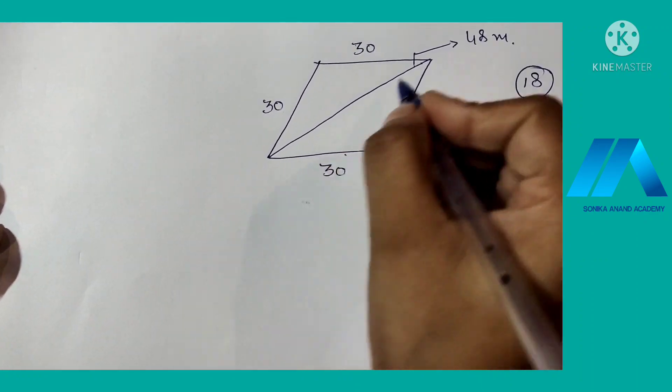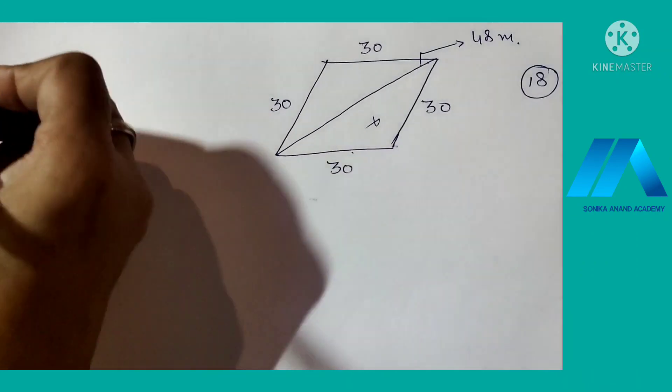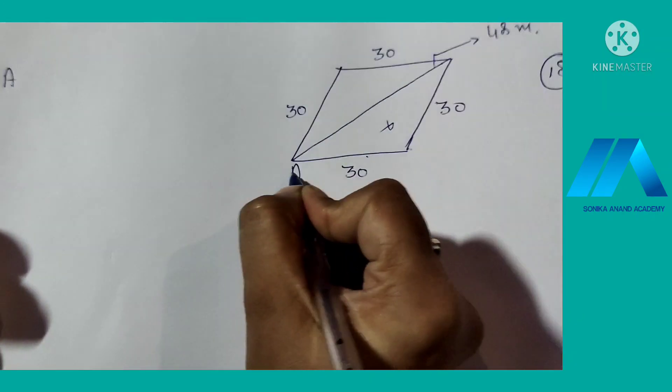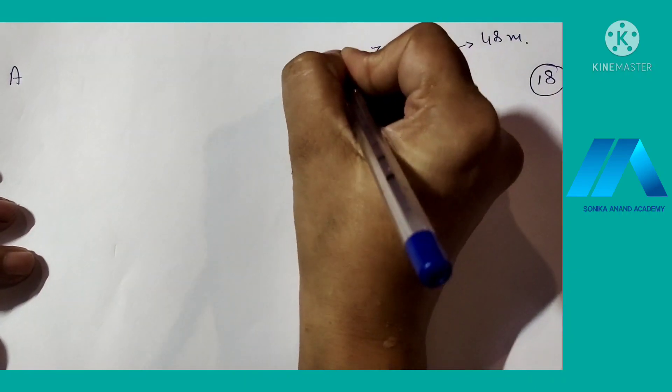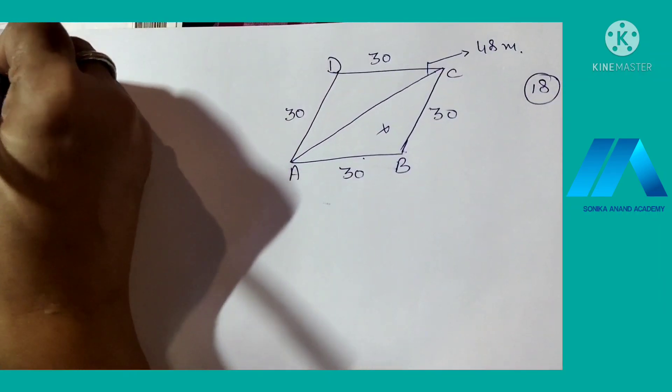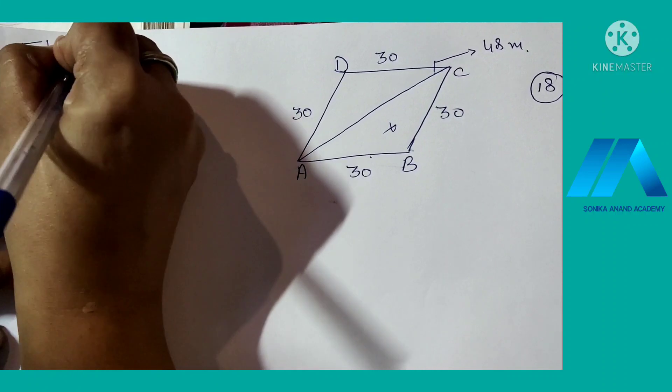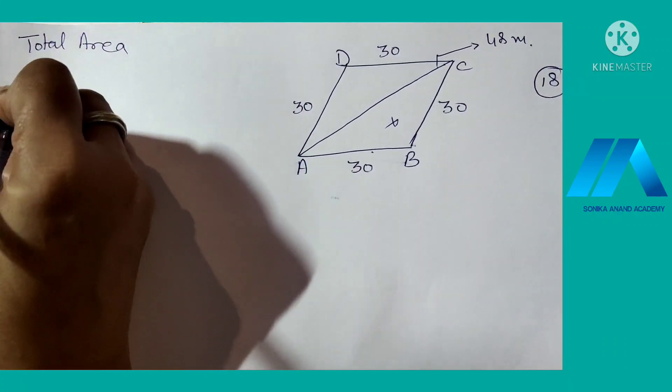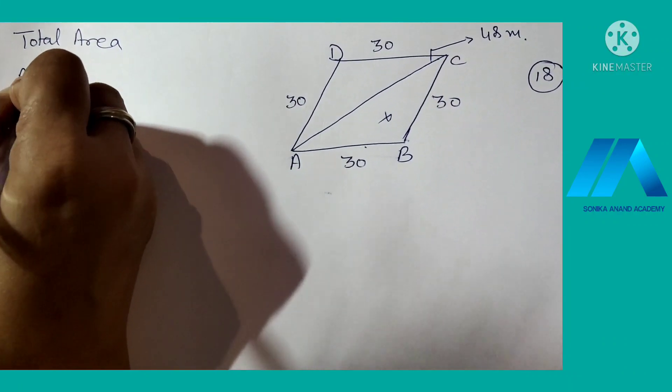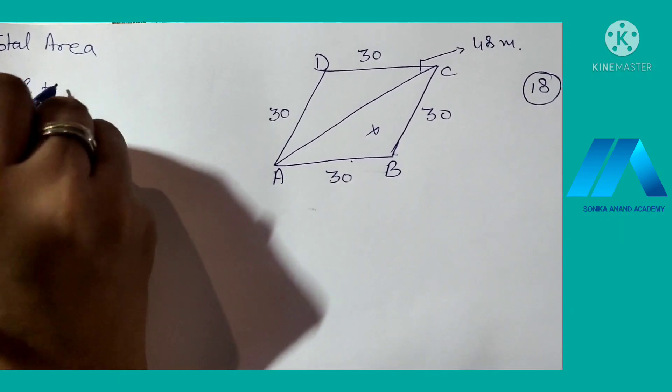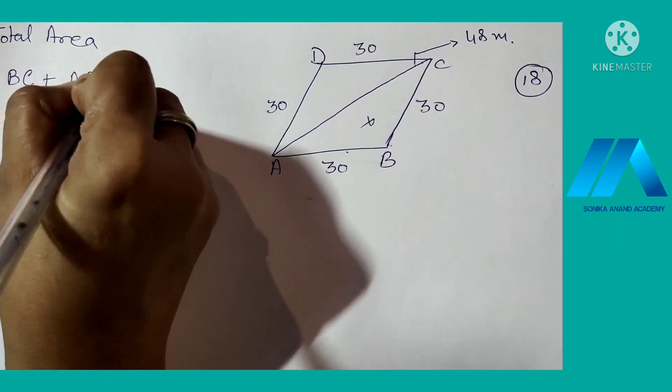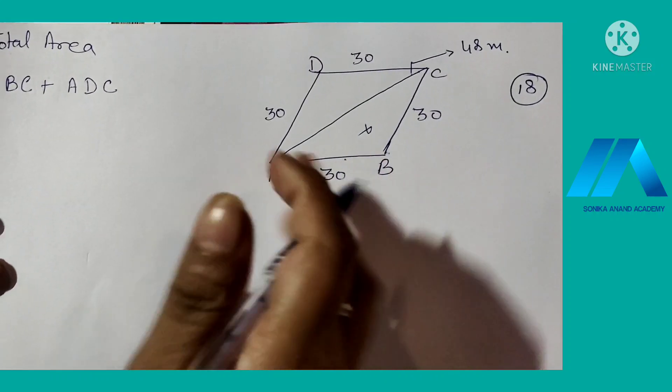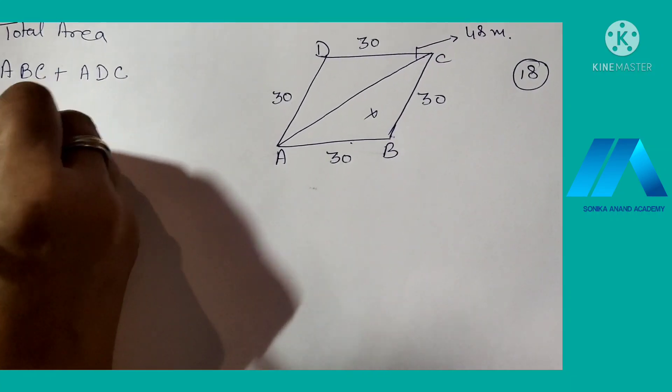If we focus on this, we have two triangles. The first triangle is ABC, and the second is ADC. So total area is equal to area of triangle ABC plus area of triangle ADC.